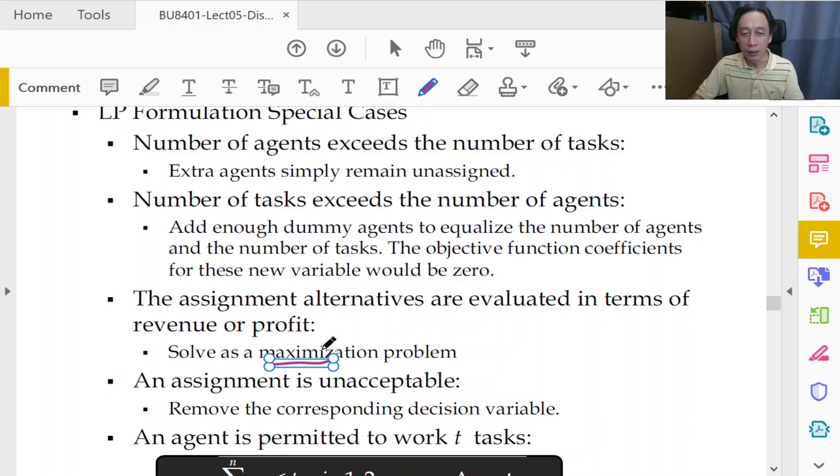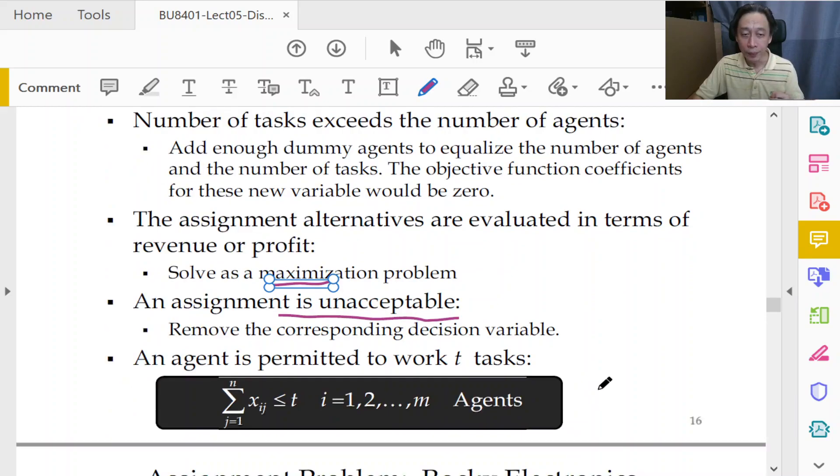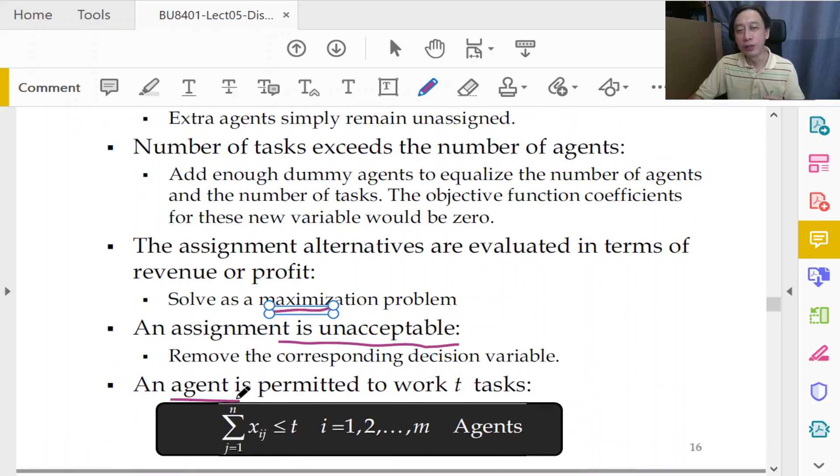Then there are also unassignable cases, as we saw in Tina Tailoring cases—certain tailors cannot do certain tasks. So in these cases, we can remove the variable because we know that it is zero. And suppose if we allow an agent to not just work on at most one task, but up to t tasks, then you can always change the right-hand side. But you have to remove, in certain other cases, you might have to remove the binary conditions, the binary constraints, because if you allow for multitasking, one person may do more than one work.